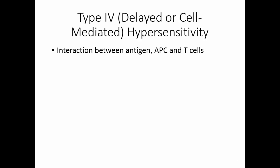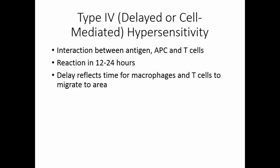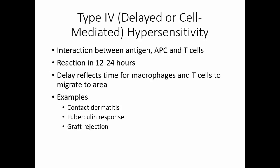Type 4 hypersensitivity is also known as delayed or cell-mediated hypersensitivity. This is the only hypersensitivity that does not involve antibodies. This is an interaction between the antigen, the antigen-presenting cell, and the T cells. It takes 12 to 24 hours for the reaction to develop. This delay reflects the time it takes for macrophages and T cells to migrate to the area. Examples of type 4 hypersensitivity include contact dermatitis, the tuberculin response, and a special type is graft rejection.